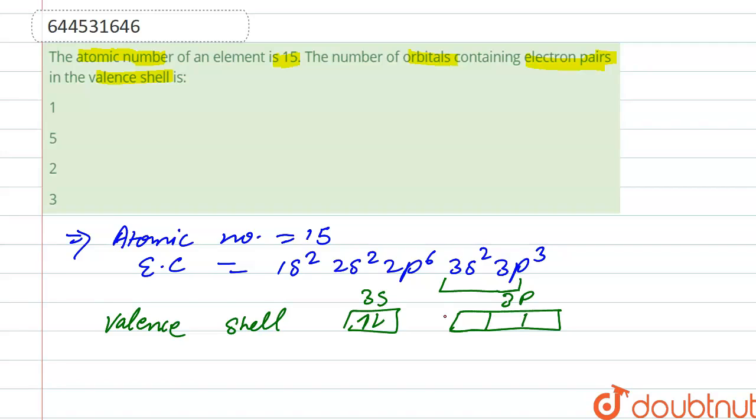Right, so here three electrons are present, one, two, and three. So what we see is that only the 3s orbital has paired electrons, which has paired electrons.